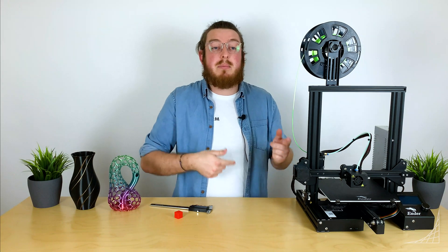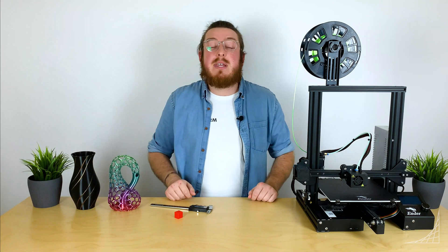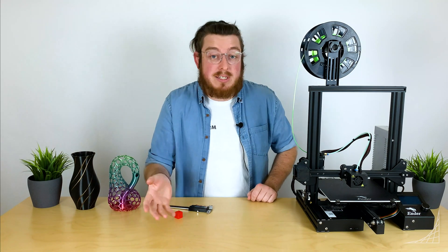Once we can take that value, we're going to be multiplying it by the machine's steps per millimeter, and that'll be whatever it is for that axis. By multiplying all that together, we'll be getting our new steps per millimeter value.